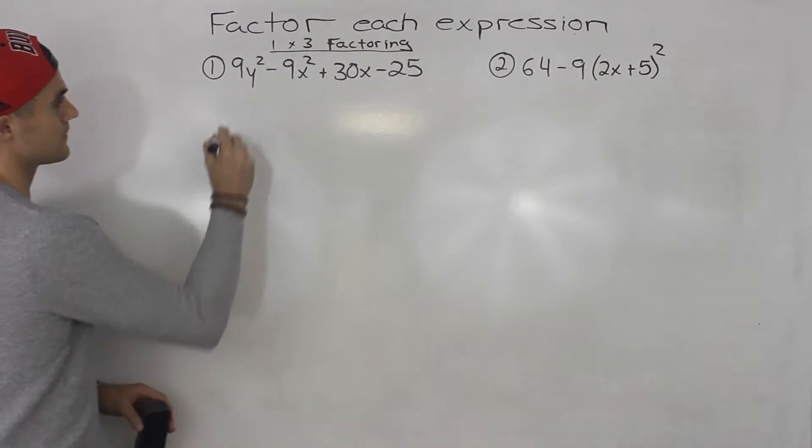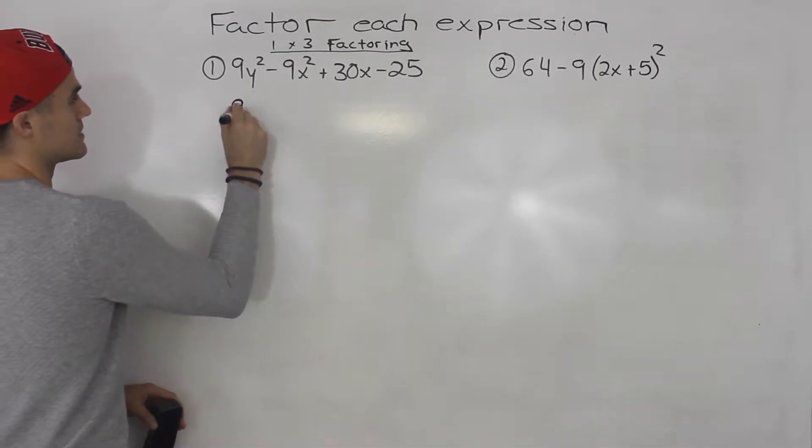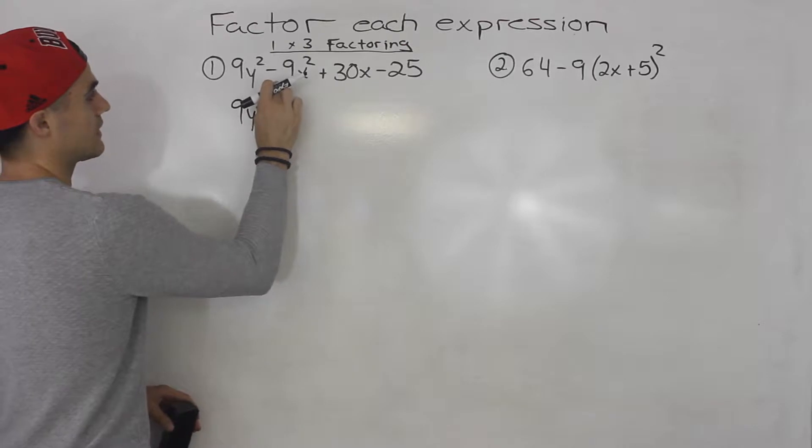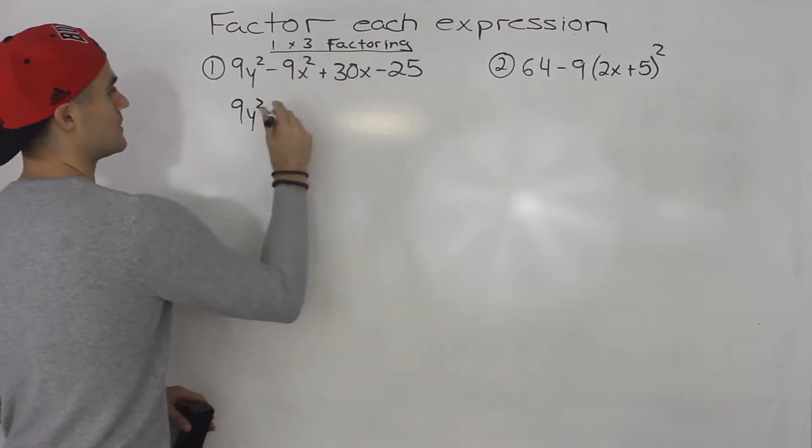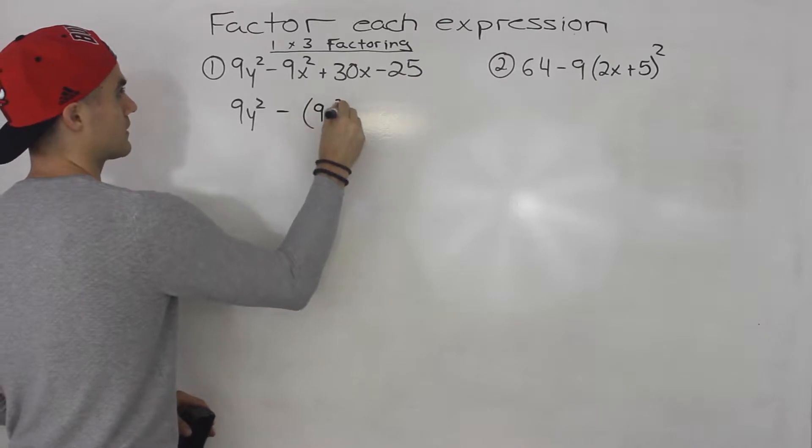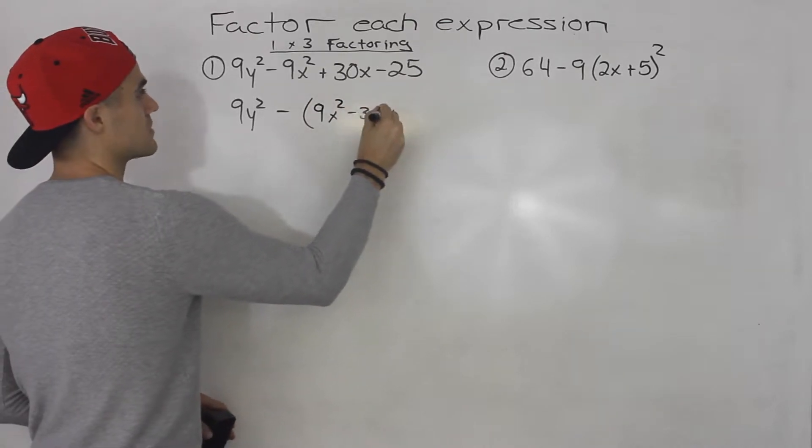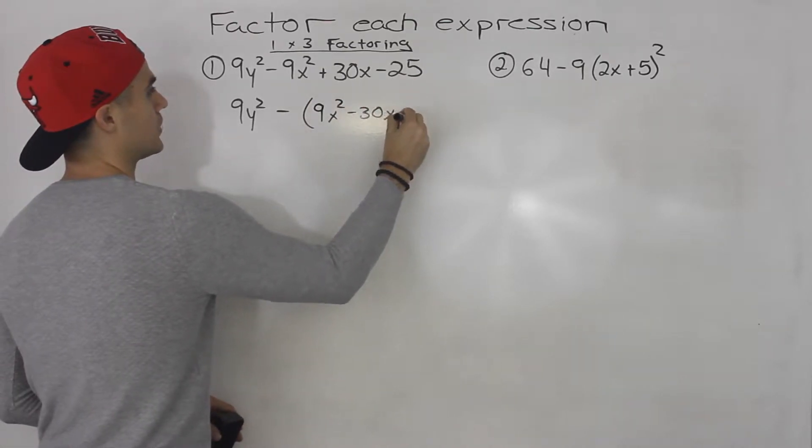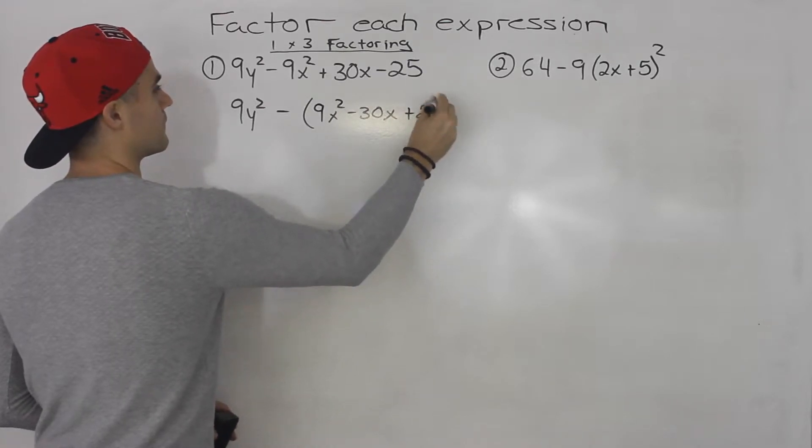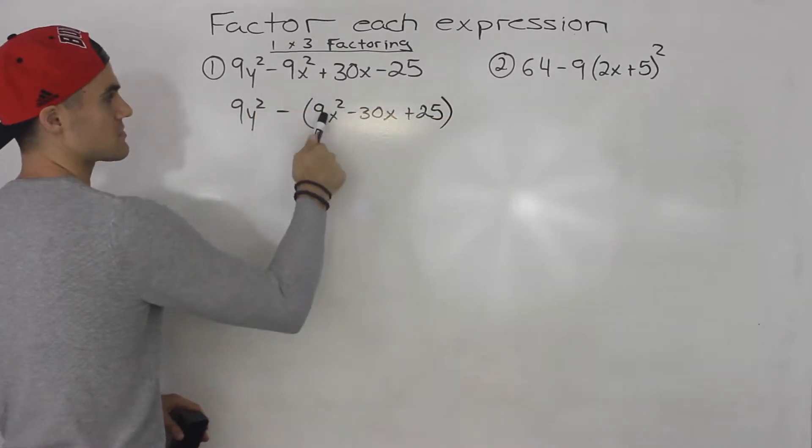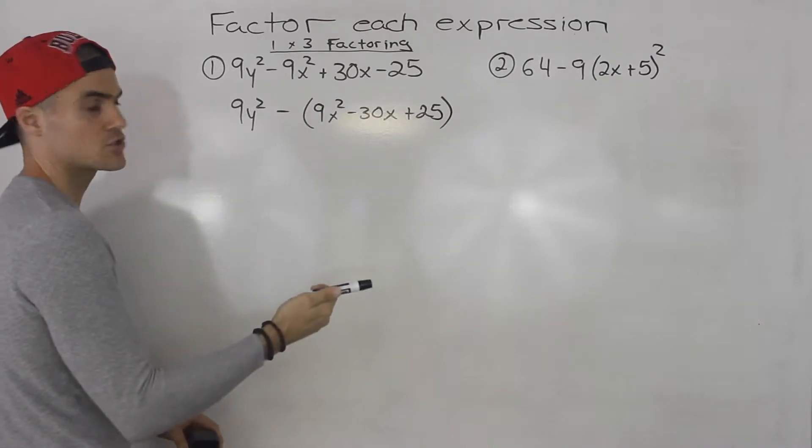So what you do, if you remember, is you factor out a negative from these three terms. So you've got to put them in brackets. So you'd be left with 9x² minus 30x plus 25. I took out a negative from these three terms and basically all of the signs changed.